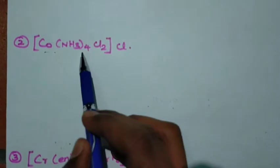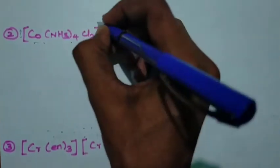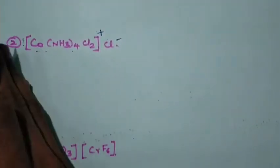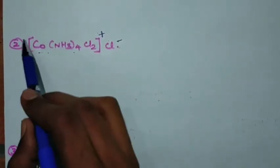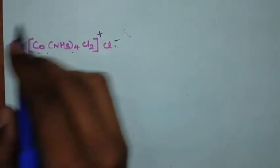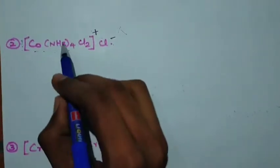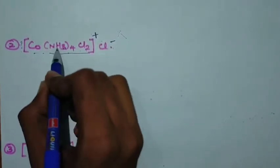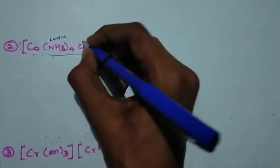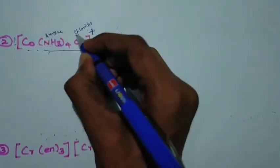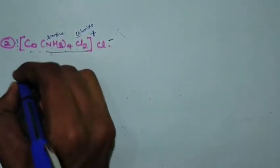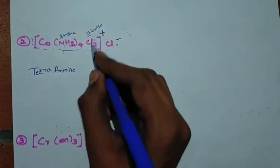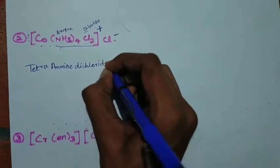Coming to the second example: [Co(NH3)4Cl2]+. Following the left-to-right rule, we compare the ligands alphabetically. We have amine (NH3) and chlorido (Cl⁻). 'A' comes before 'C', so amine is named first. There are 4 amines, so 'tetraamine', and 2 chlorides, so 'dichlorido'. So inside the bracket: tetraaminedichlorido.